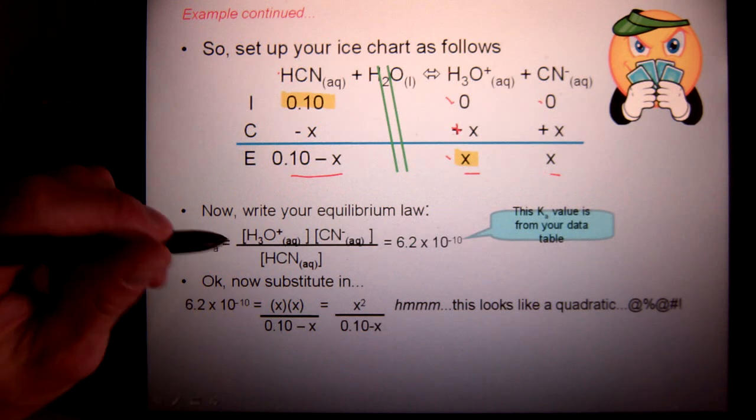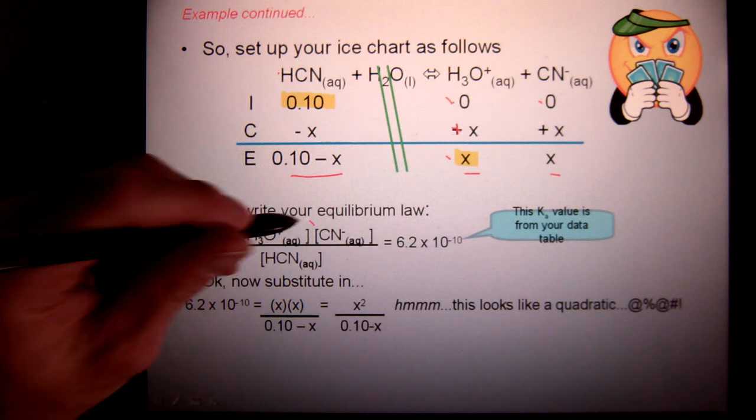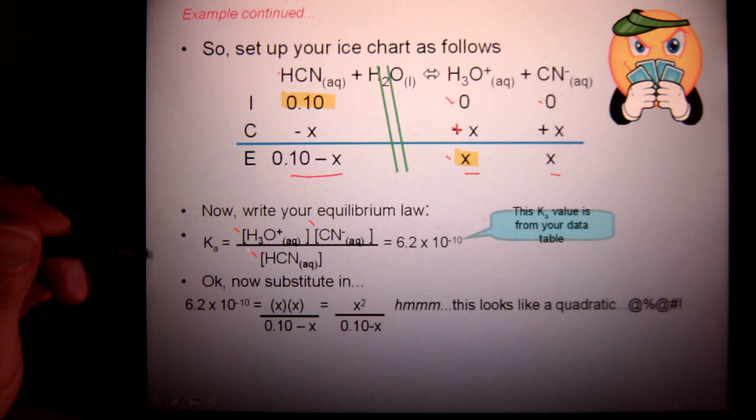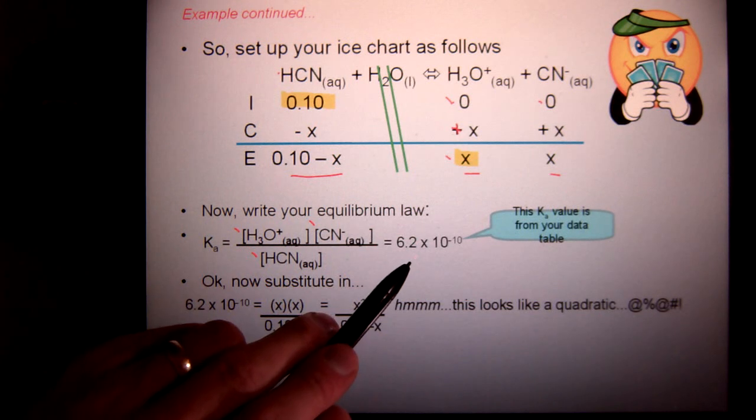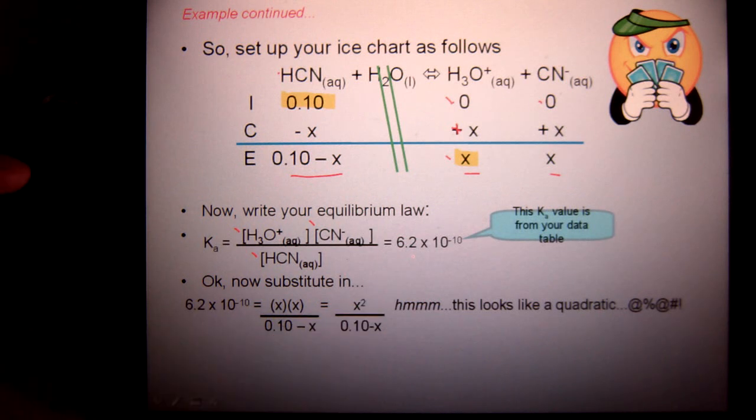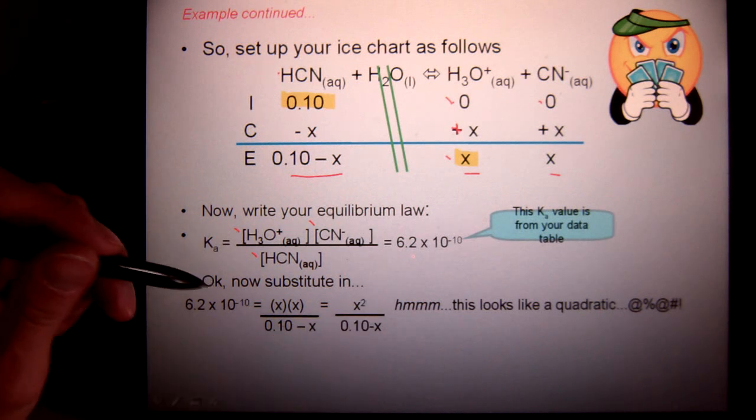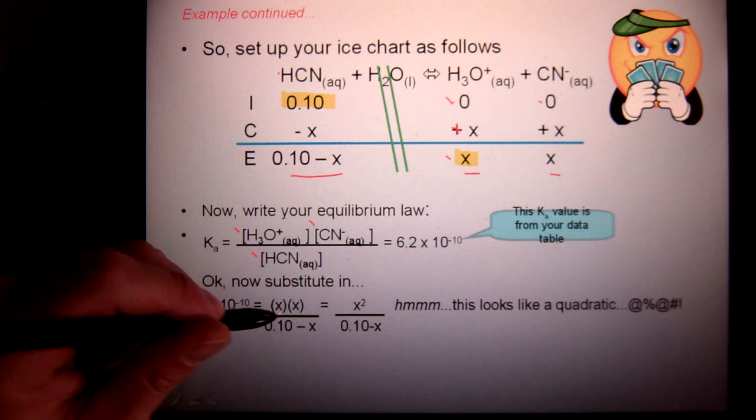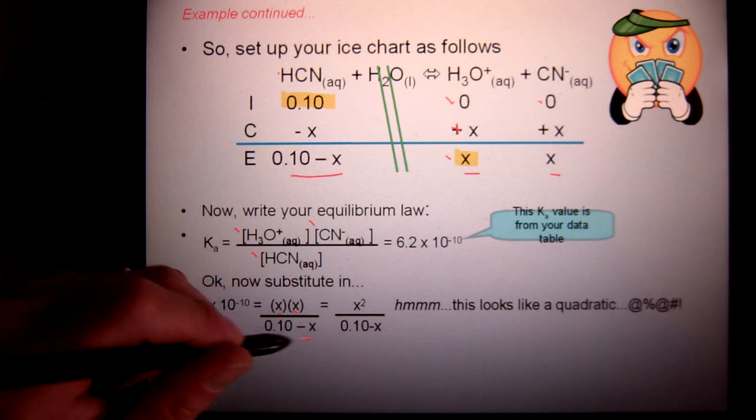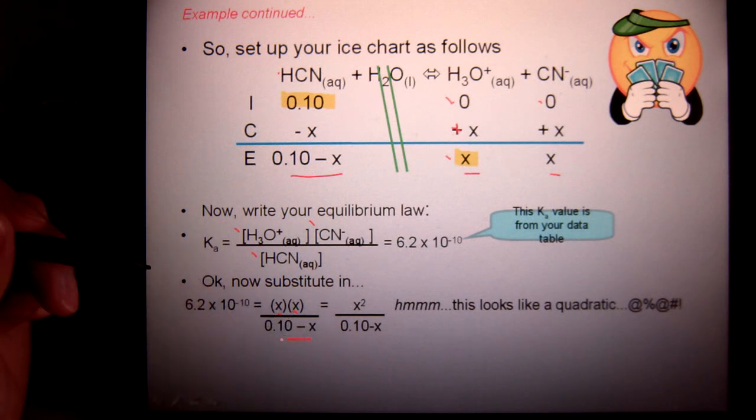Okay? I have my equilibrium law. Product over reactants, H3O times CN over HCN. Then I have the K value as well. So, I do have a bit of information. I got this right from my data booklet. This is the K value of HCN. Now, put in our values. I've got x times x over 0.1 minus x. And that's no good, because it has a quadratic.